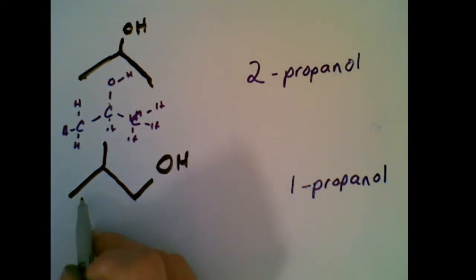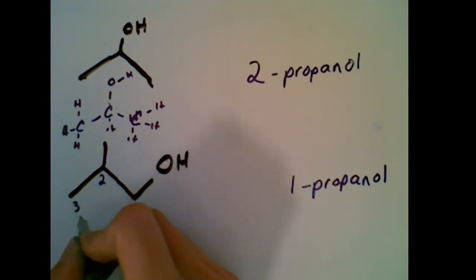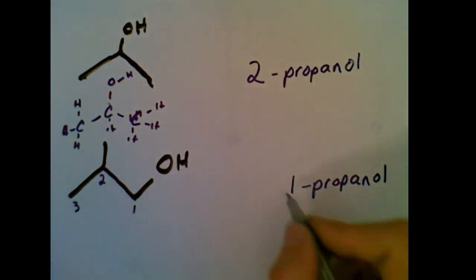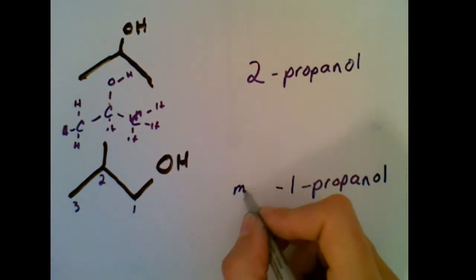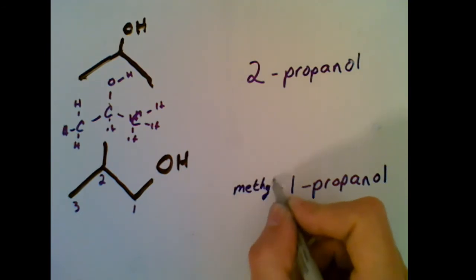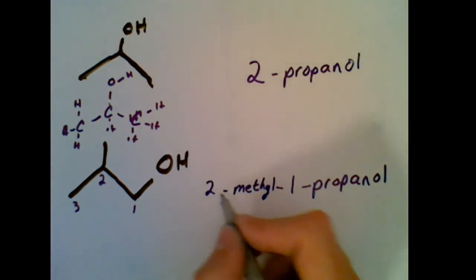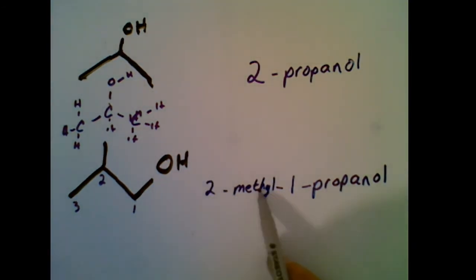Now, the next thing we would do is we name the substituent. And since this is carbon number one, it makes this carbon number two, and then this carbon number three. Remember, the OH is the priority and must have the lowest number. So that makes this a methyl with its one carbon branch in the two positions. We have two methyl, one propanol.